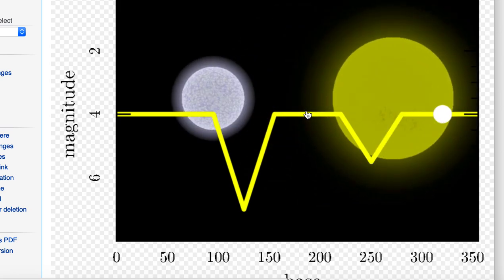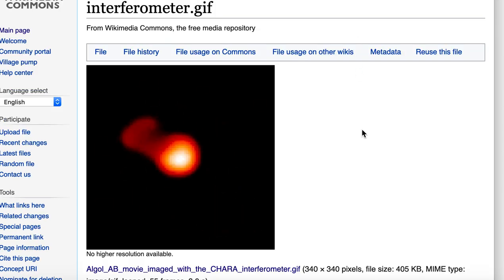Now this is an animation, whereas this is the actual observation. This is an ALGOL A and B movie image with the CHARA interferometer.